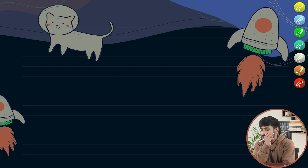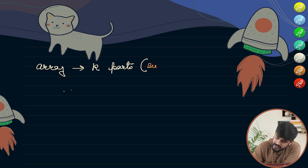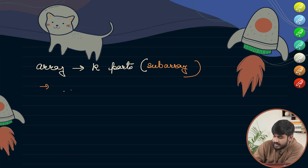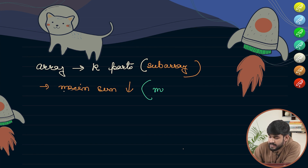Hi and welcome to GeeksforGeeks. Today we will be discussing the problem Split Array Largest Sum. In this problem you are given an array and you need to split it into k subarrays such that each element belongs to either of the subarrays, and the maximum sum of any subarray should be the minimum. In layman's terms, you need to minimize the maximum sum of all the k parts.